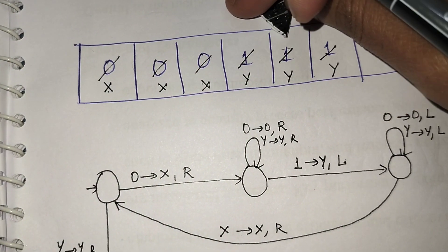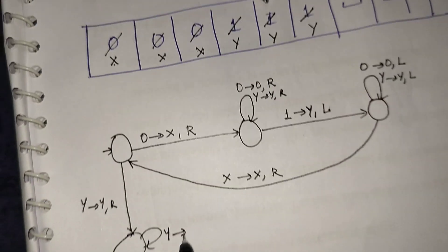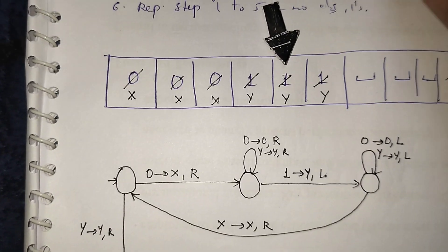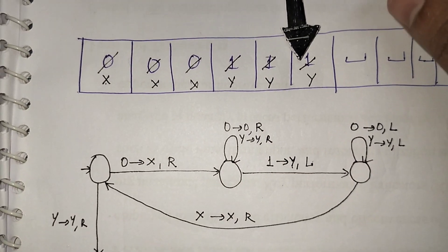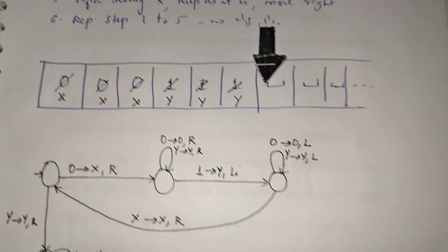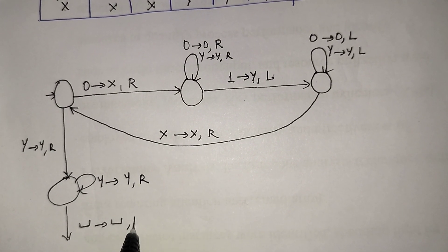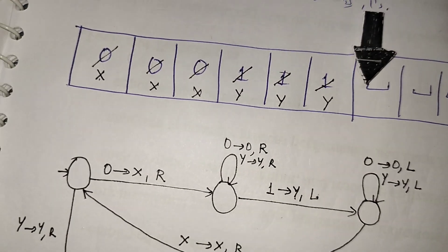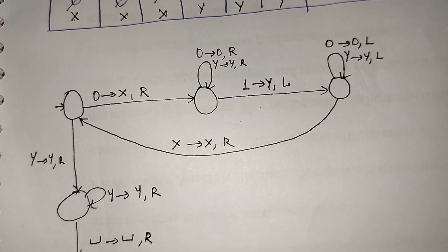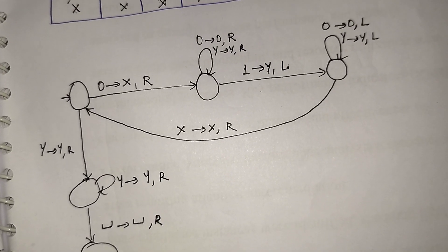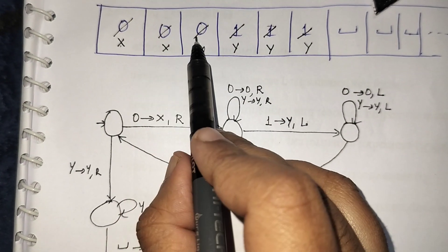Here I see n number of y's, just put a self loop. Whenever I see a y, keep as it is, move towards right. Again seeing y, repeat the same — don't do anything, keep as it is. Then again moving towards right, I see the blank symbol. Whenever I see a blank symbol, don't do anything. Now we are seeing blank symbols only — that means everything is complete, meaning the string is accepted. We have replaced all zeros with x and all ones with y.